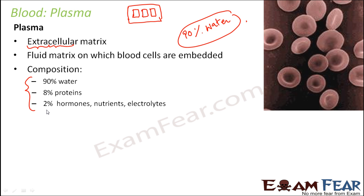This plasma basically gives the fluidity of blood. Blood can flow so smoothly because more than half of it is plasma, and plasma contains 90% water. That's why it has its fluid behavior.